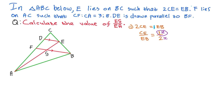So I go straight to the diagram. Where I see CE, I write 1X; where I see EB, I write 2X. If I find another ratio in the information, I'll use a different variable — Y or P, whatever alphabet you want.